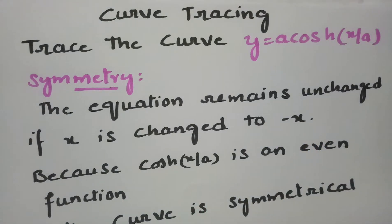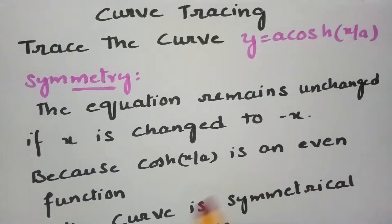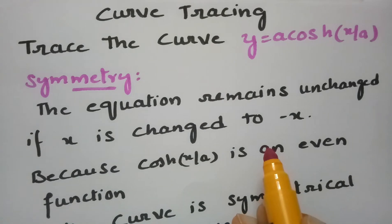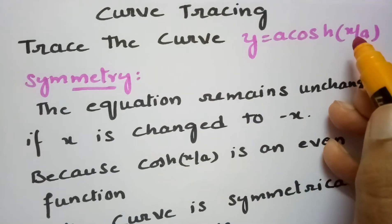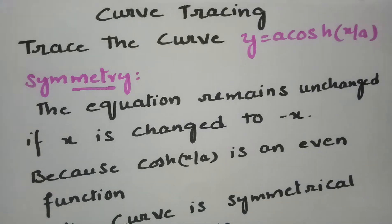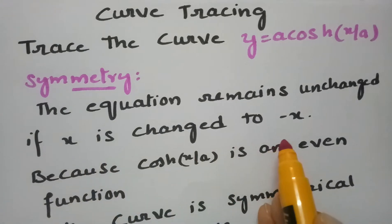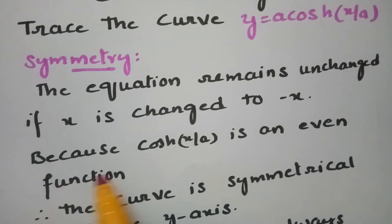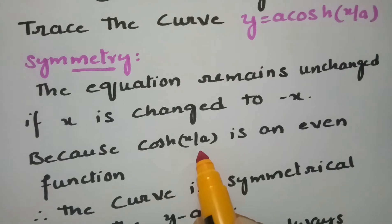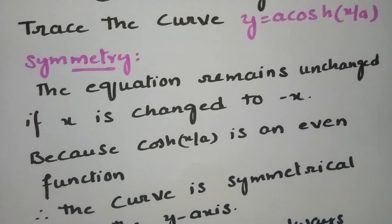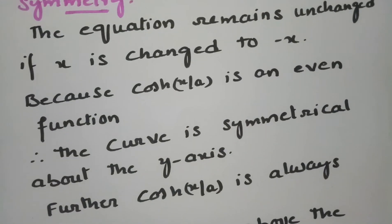Using the procedure, first I have to check the symmetry. The given equation remains unchanged if x is changed to minus x, because cosh(x/a) is an even function. Therefore, we say that the curve is symmetric about the y-axis.